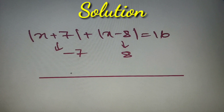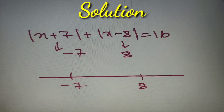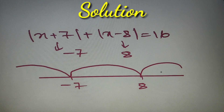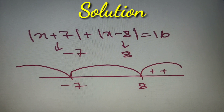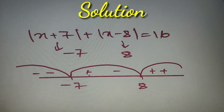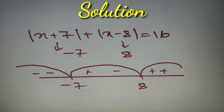The second step is to plot them on the number line. We have two numbers: -7 and 8. Using the wavy curve method, we get three regions: 8 to infinity, -7 to 8, and -7 to minus infinity. From 8 to infinity, both moduli are positive. Between -7 and 8, the first is positive and the second is negative. From -7 to minus infinity, both moduli are negative. We calculate x for each case and then add the values.